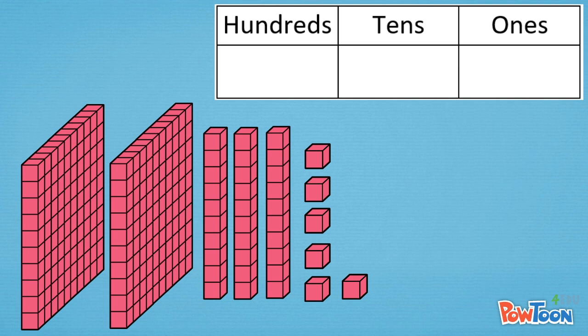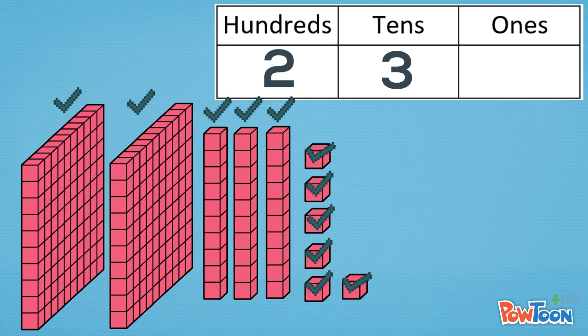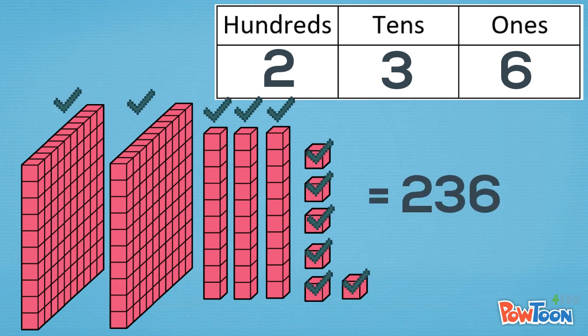One hundred. What number does this model show? How many hundreds are there? Two. How many tens are there? Three. How many ones are there? Six. What number does this model show? Two hundred thirty-six.